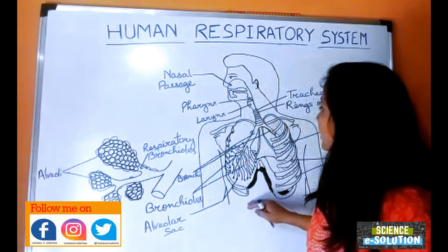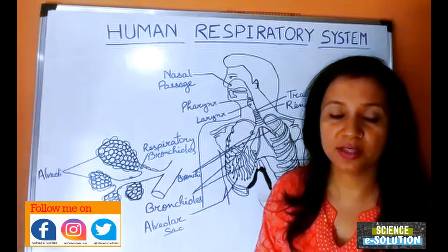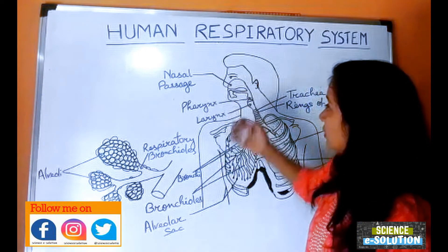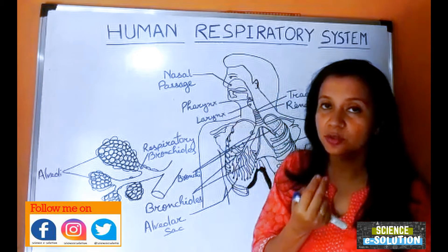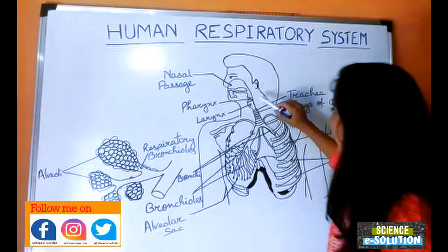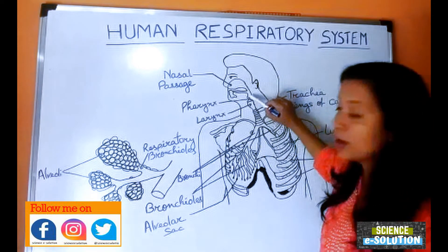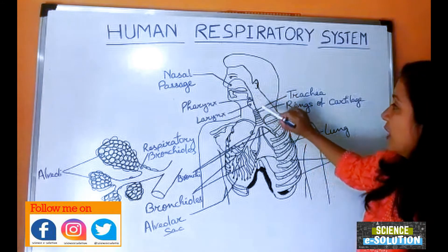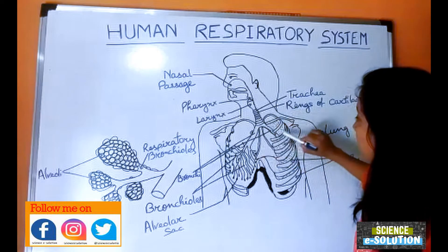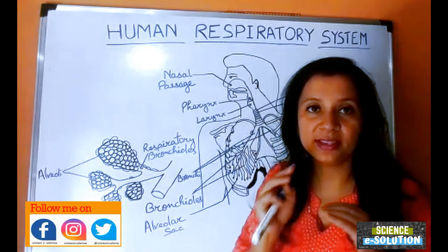Now let us see the different organs involved in the human respiratory system. Air enters our body through the nose, then through the nasal passage, then into the pharynx, then into the larynx, then into the trachea, and after the trachea it enters into both the lungs.